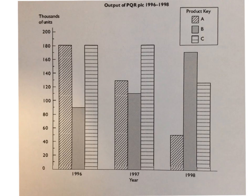This is a compound bar chart where we're comparing the output of three different kinds of products. You can see we have a key here to identify the different products.